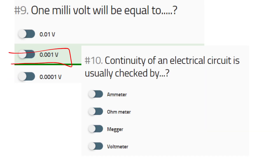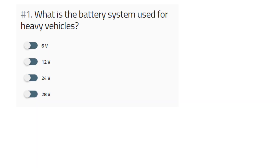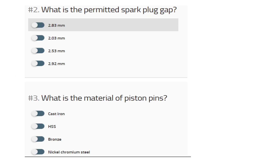1 millivolt is equal to 0.001 volt. Continuity of an electrical circuit is usually checked by an ohmmeter. What is the battery system used for heavy vehicles? — 24 volt. What is the permitted spark plug gap? — 2.03 mm.